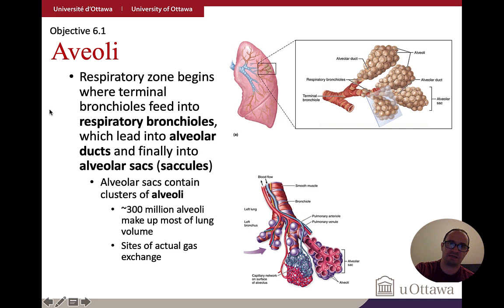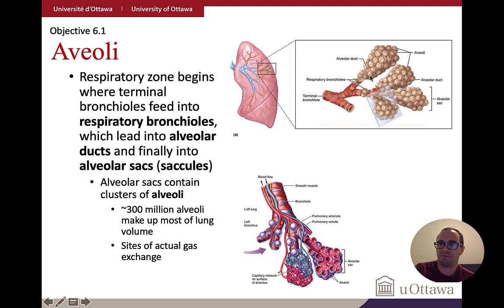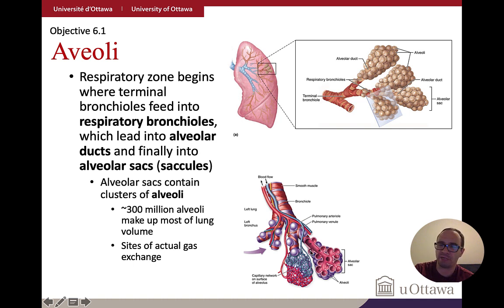The terminal bronchioles divide into respiratory bronchioles, which lead to the sac-like structures called alveoli. The alveoli occur in bunches — often described as grape-like, though more accurately like grapes attached directly to the stem. There are over 300 million alveoli making up most of the lung volume, and they are the actual sites of gas exchange.